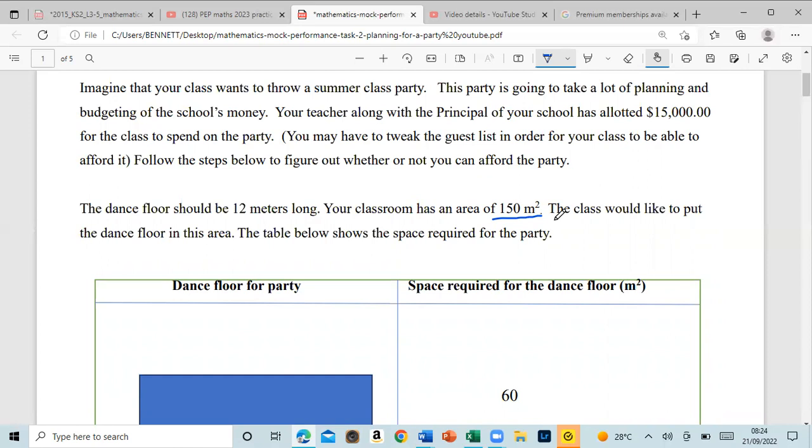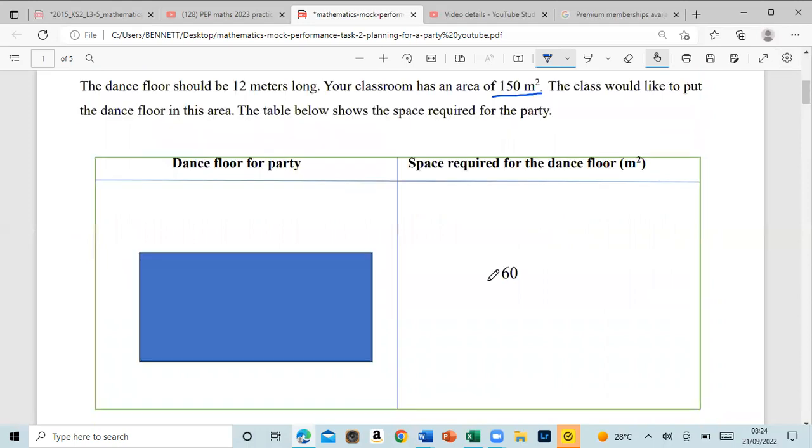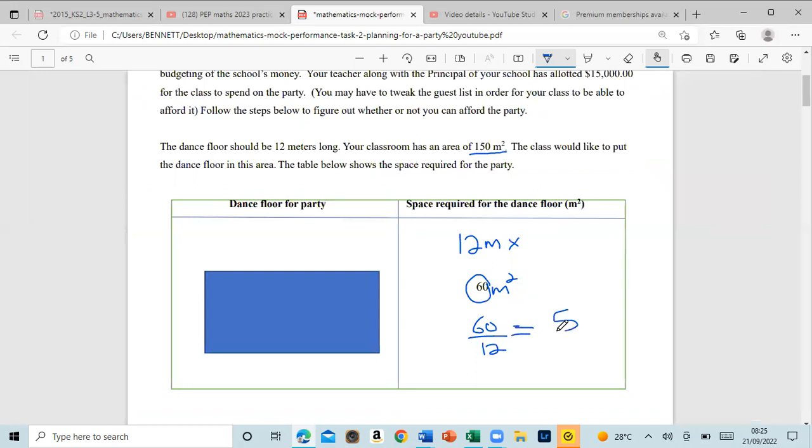The dance floor should be 12 meters long. Your classroom has an area of 150 square meters. They told us the dance floor should be 60 square meters. They gave us the length to be 12. Ask yourself, what times 12 can give you 60? Or 60 divided by 12 gives you 5. So basically, the dance floor is 12 by 5. Let us put in the 5 now: 1, 2, 3, 4, 5.